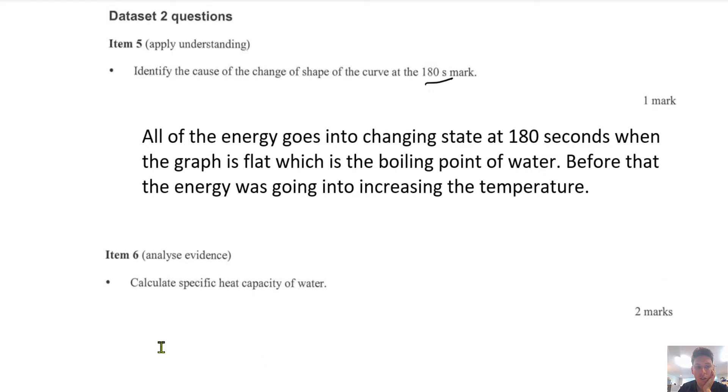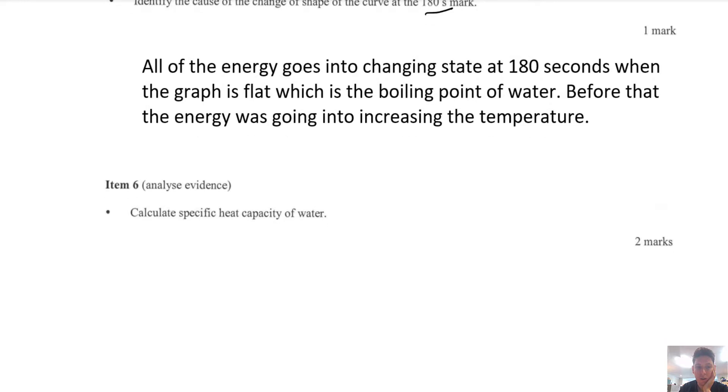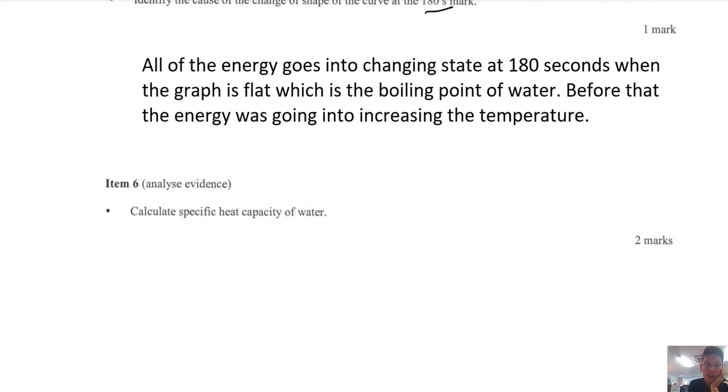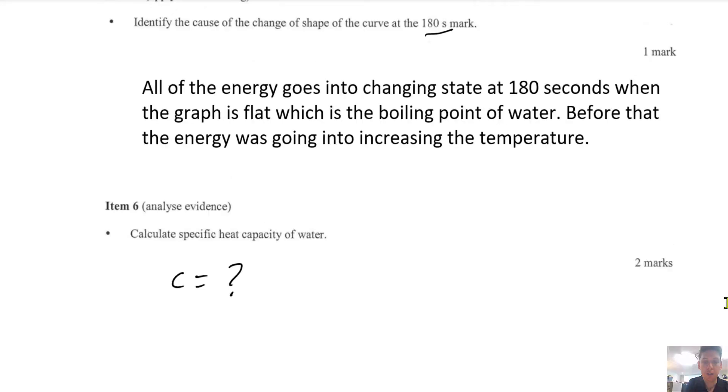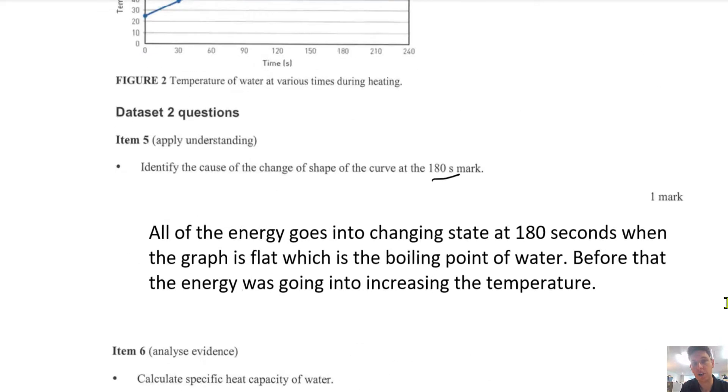Alright, question two, or item six, calculate the specific heat capacity of water. So we're trying to find out what is the C value. You may remember this formula. So we need to find out all of these parts to figure out what C is. This formula is also useful. So Q is equal to power times time.